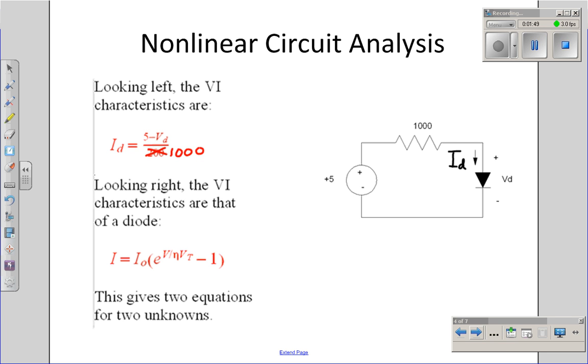One way to do that is take the circuit and split it. Looking left, the voltage and current are related by the 5-volt source and 1000-ohm resistor. The current that I draw is going to be 5 volts minus the volts across the diode, whatever that is, divided by 1000 ohms. That gives me the current through the resistor, which is I sub d.